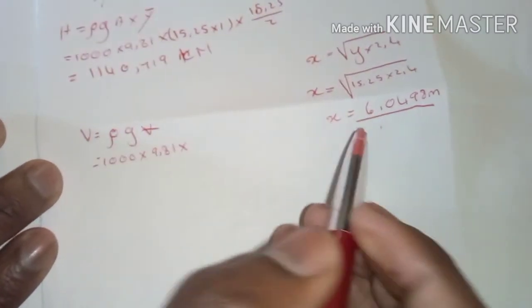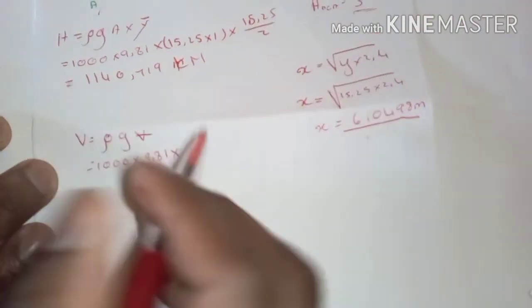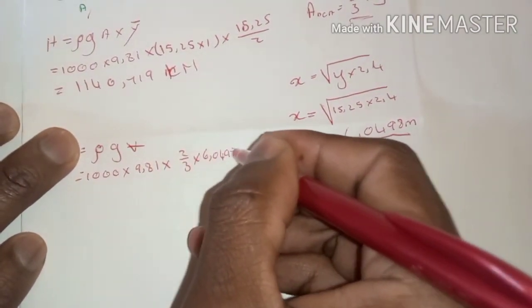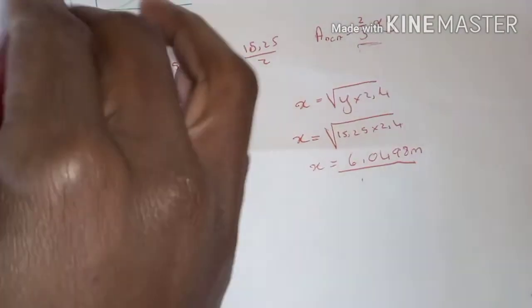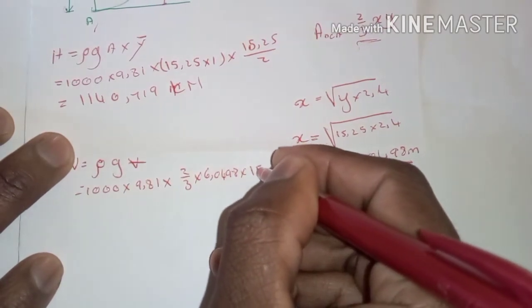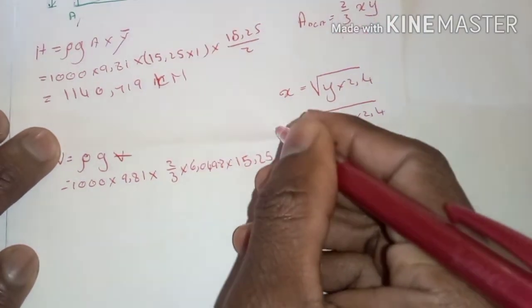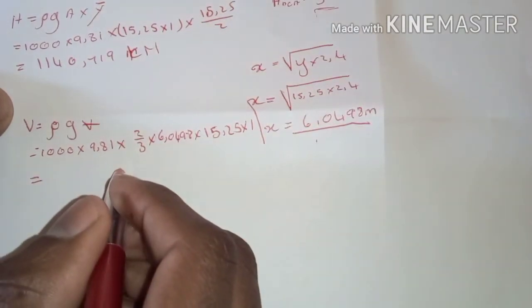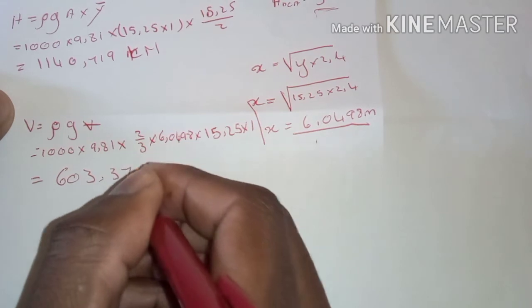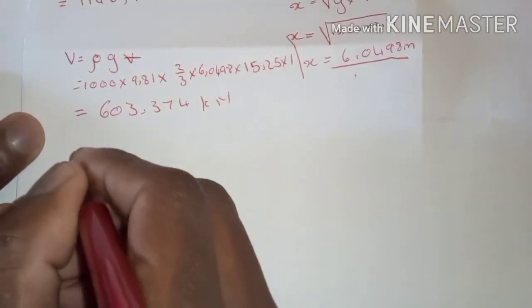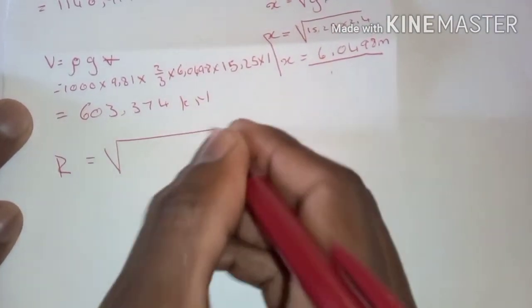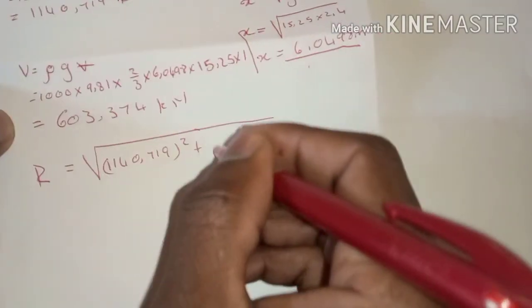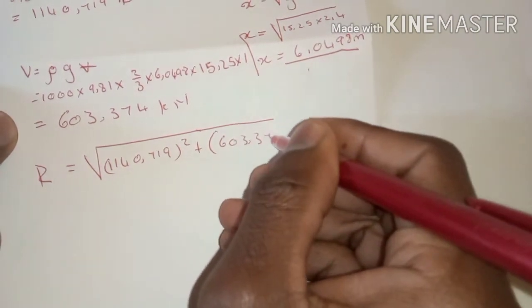Substituting into the area formula: area DCA = two-thirds × 6.0498 × 15.25 × 1 (the unit length must be included). This gives V = 603.374 kilonewtons. We can now calculate the resultant: R = √(H² + V²) = √(1140.719² + 603.374²).